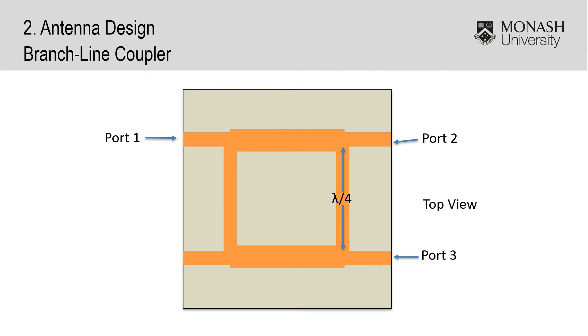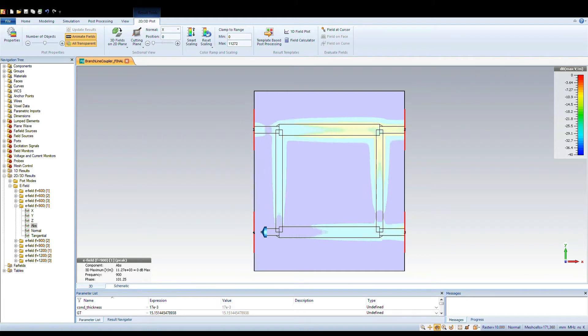The main square at the center has the dimensions of a quarter wavelength. This means that the power travelling from port 1 will travel to port 2 faster than port 3, which will be a quarter wavelength or 90 degrees behind. Power should be divided equally between ports 2 and 3. The power division and 90 degrees phase shift is what gives the antenna its circular polarization.